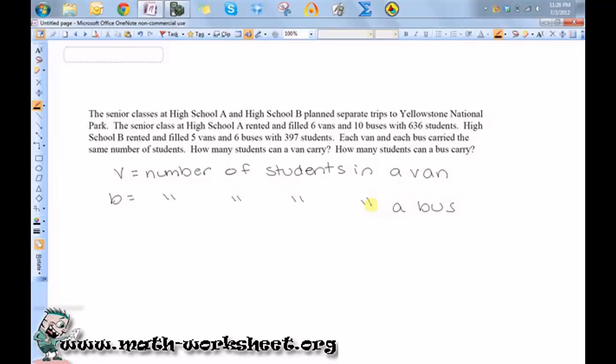Okay, so let's look at high school A. Okay, so they rented six vans and ten buses and got 636 students. So what they have here is six of the number of students in a van and ten of the number of students in a bus for a total of 636 students. So I can represent that by 6 times the number of students in the van plus 10 times the number of students in a bus equals 636.